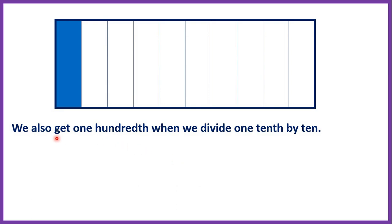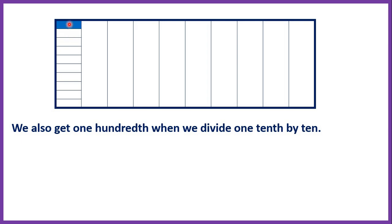We can also get 1 hundredth when we divide 1 tenth by 10. In this rectangle, we can see that 1 part out of 10, or 1 tenth, is shaded. If we divide this shaded part into 10 and keep only 1 tenth of it, then we have 1 hundredth — the same amount of the rectangle shaded as on the previous example. So 0.1 divided by 10 equals 0.01, or 1 tenth divided by 10 is 1 hundredth.